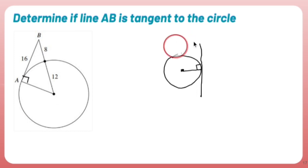What information do I have? I have the fact that that radius is 12, which means this length right here is 12. I also know that this is 8. So this guy right here is 8 plus 12, which is 20.